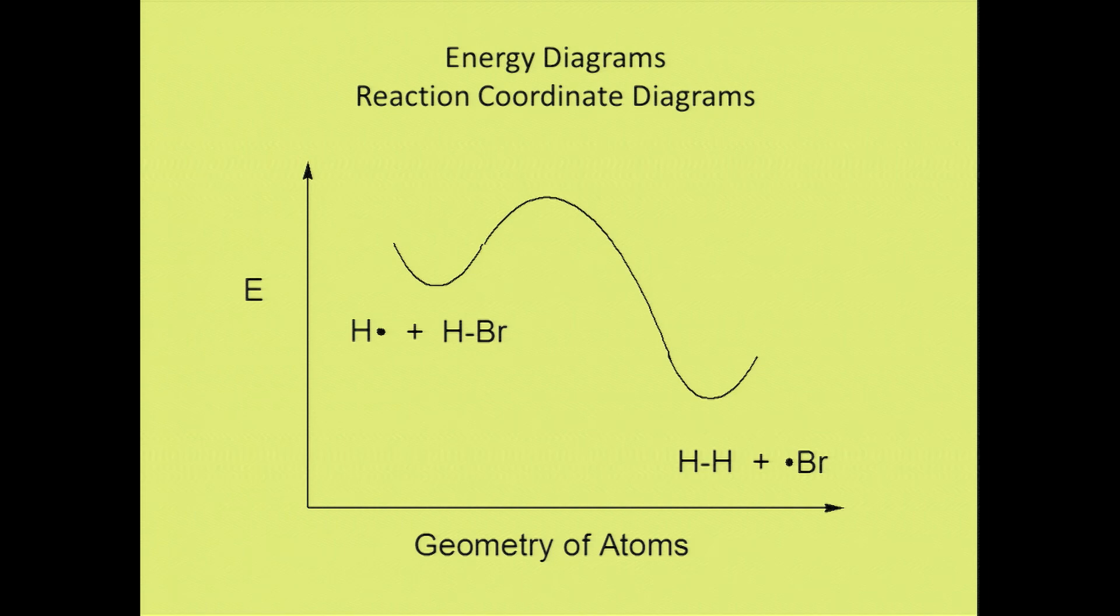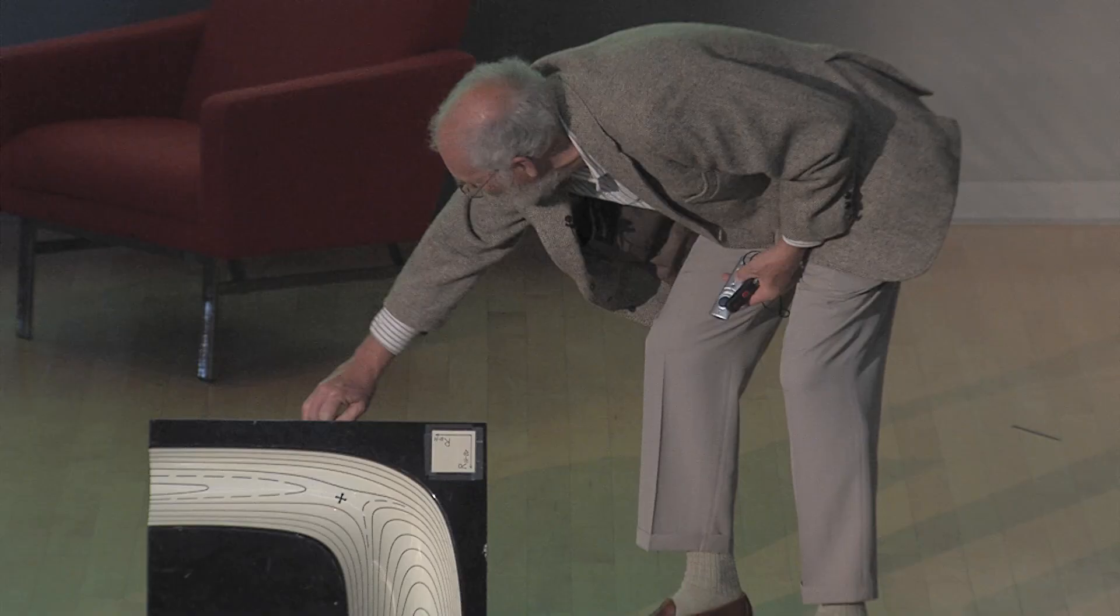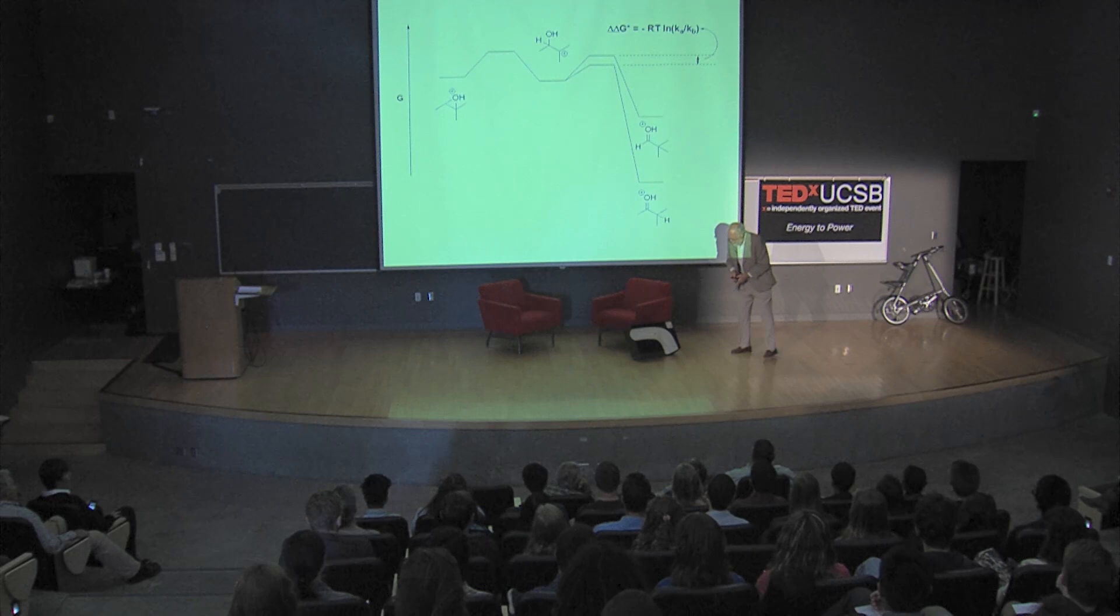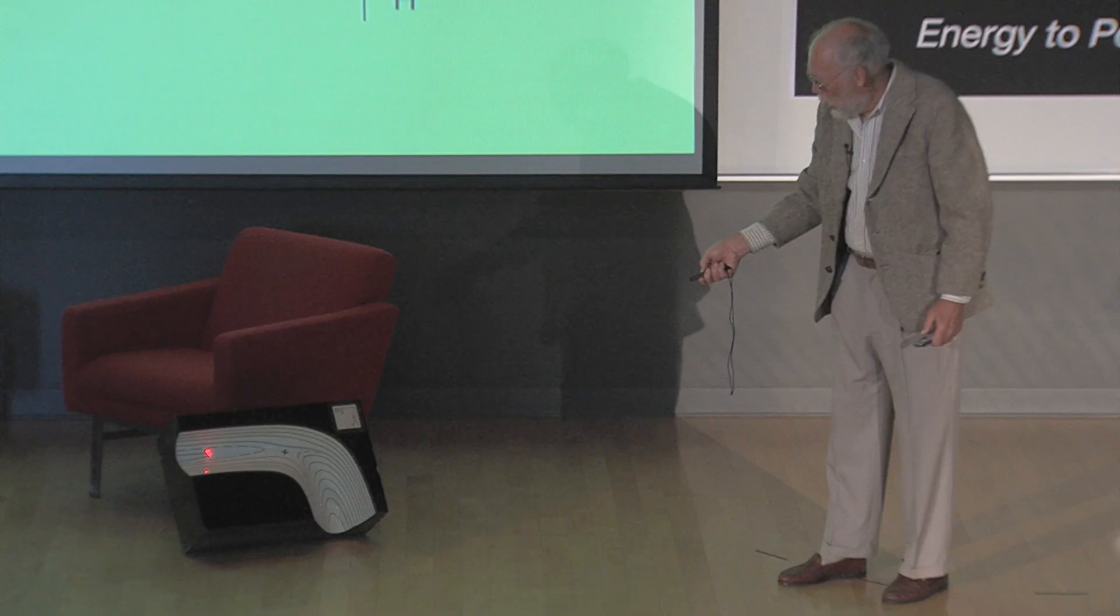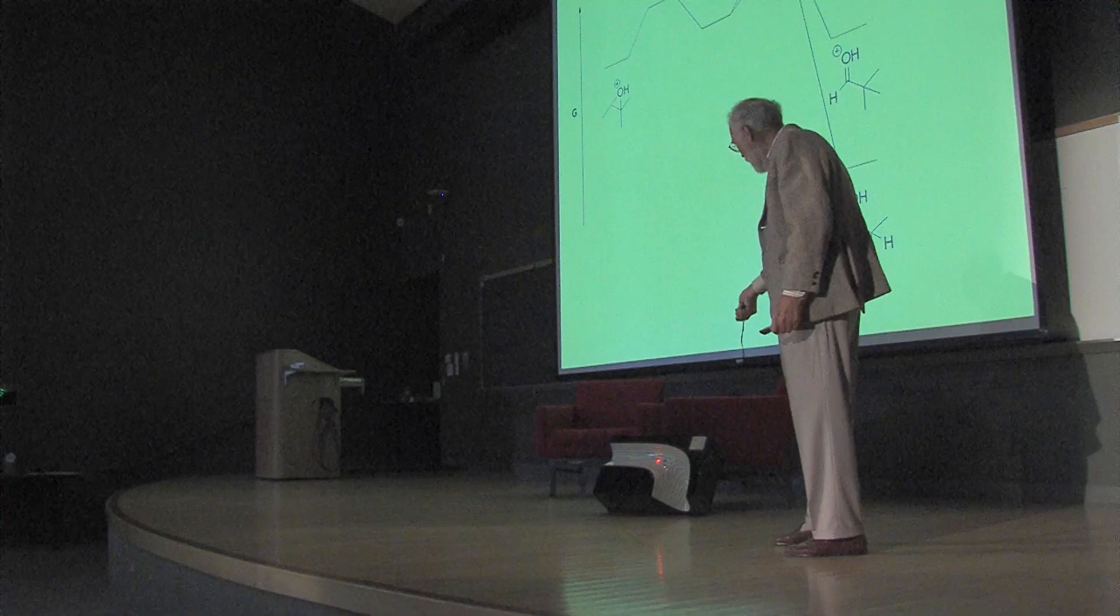The energy changes as shown, starting in a valley, going up to what we call a transition state which is a mountain pass, then coming down into another valley. For that exact reaction, I have this energy surface which shows how that reaction occurs in 3D. We start at a high valley, go uphill—these are like contour lines—to a mountain pass and then down into a deeper valley at lower energy.